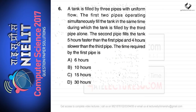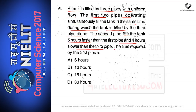The next question: a tank is filled by three pipes with uniform flow. The first two pipes operating simultaneously fill the tank in the same time during which the third pipe alone fills it. The second pipe fills the tank five hours faster than the first pipe and four hours slower than the third pipe. The options for the time required by the first pipe are 6, 10, 15, and 30 hours.